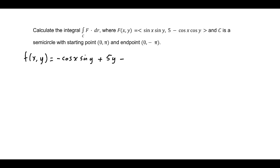Actually, we can simplify that to just -cos x sin y + 5y. I'm going to take the derivative with respect to x, which gives sin x sin y. That matches the x component. The y component would be 5 - cos x cos y. So that's actually a good potential function.